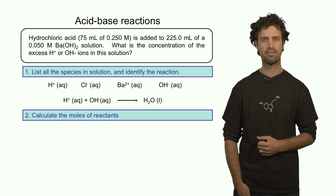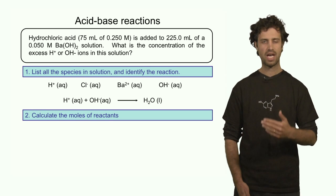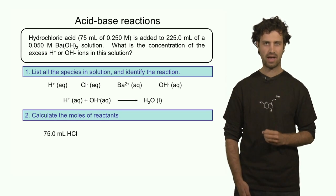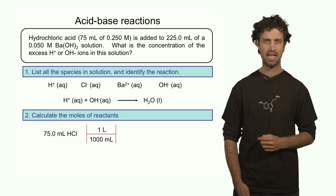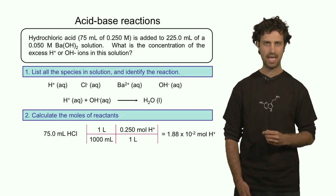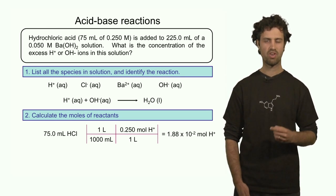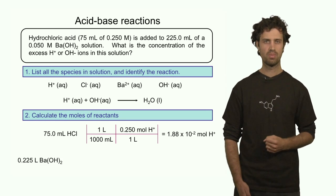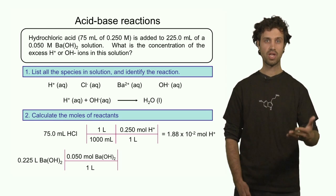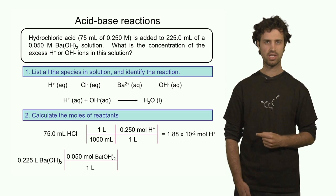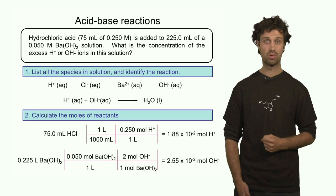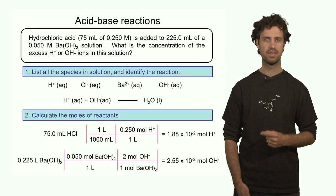So let's start finding out how many protons we have in solution. Volume times molarity is the recipe we will use. The volume of the hydrochloric acid solution is 75 milliliters. We convert it quickly into liters and then multiply by the molarity. We find a total of 1.88 × 10⁻² moles of protons. We can do the same type of calculation to find the number of moles of hydroxide anions. This is the volume of the barium hydroxide solution; we multiply the volume by the molarity. But then we have to realize that each barium hydroxide unit produces two hydroxide anions — so two moles of hydroxide anions for each one mole of barium hydroxide. Completing this calculation, we find 2.55 × 10⁻² moles of hydroxide anions in solution.